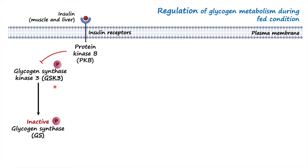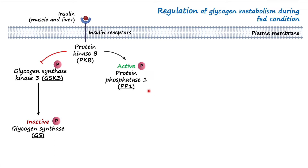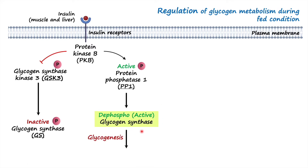PKB also phosphorylates another protein called protein phosphatase 1 (PP1). When PP1 is phosphorylated it is considered active, and since it is a phosphatase, its role is to remove phosphate groups. PP1 dephosphorylates glycogen synthase enzyme, and when glycogen synthase is dephosphorylated it is considered active, further activating glycogenesis so that glucose is used to synthesize glycogen.